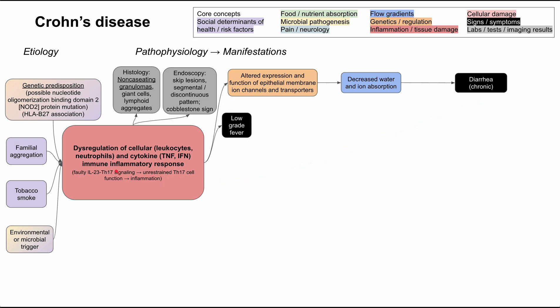Because of this unnecessary inflammation, the body will show a low-grade fever. The inflammation also causes local tissue damage — edema and erosions can lead to ulcers and necrosis of the bowel. The typical location is the terminal ileum and the colon, and usually the rectum is spared. This discontinuous pattern contrasts with ulcerative colitis, which may affect the rectum. In Crohn's disease, the terminal ileum is definitely affected and the rectum is definitely not.